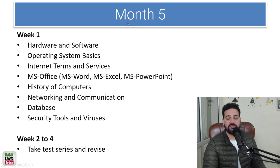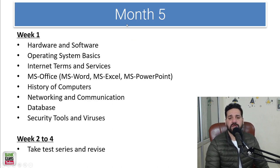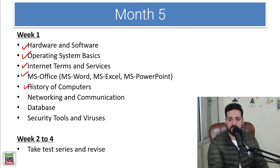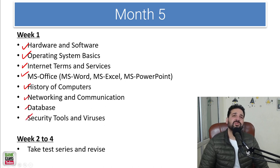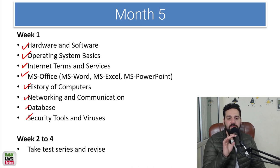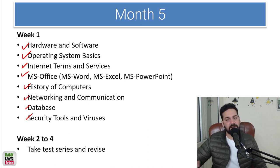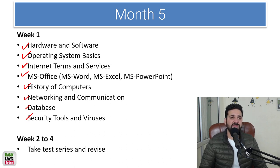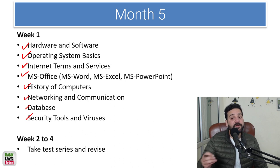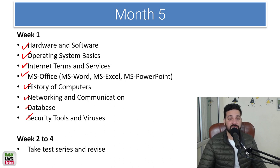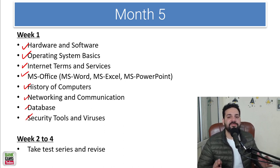In month 5, during the first week, you can cover hardware and software, operating system basics, internet terminology, MS Office, history of computers, networking, databases, and security tools — all computer topics can be covered in one week. In weeks 2 through 4, take the test series and do revisions. Five months should be more than sufficient, but there is a buffer month for working professionals who may lag behind. Exam dates can also shift, so the buffer provides flexibility.